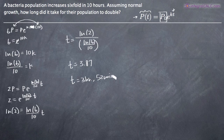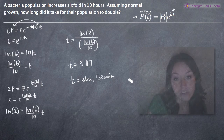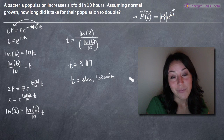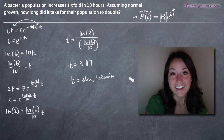So we know that from the problem, it took the population ten hours to grow to six times its original size. It took approximately three hours and fifty-two minutes for the population to double its size. I hope this video helped you guys and I'll see you in the next one. Bye!